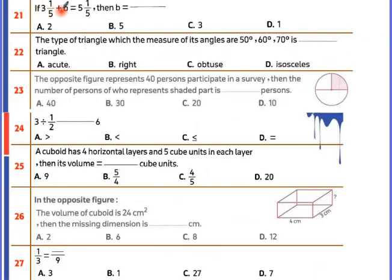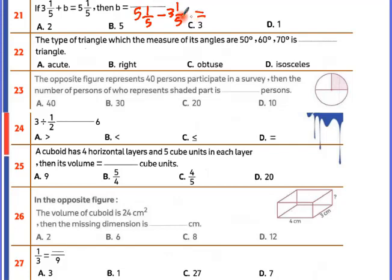3 and 1 over 5 plus b equals 5 and 1 over 5. Move to the other side as minus: 5 and 1 over 5 minus 3 and 1 over 5. The fractions cancel to zero, leaving whole number minus whole number: 5 minus 3 equals 2. So b equals 2.